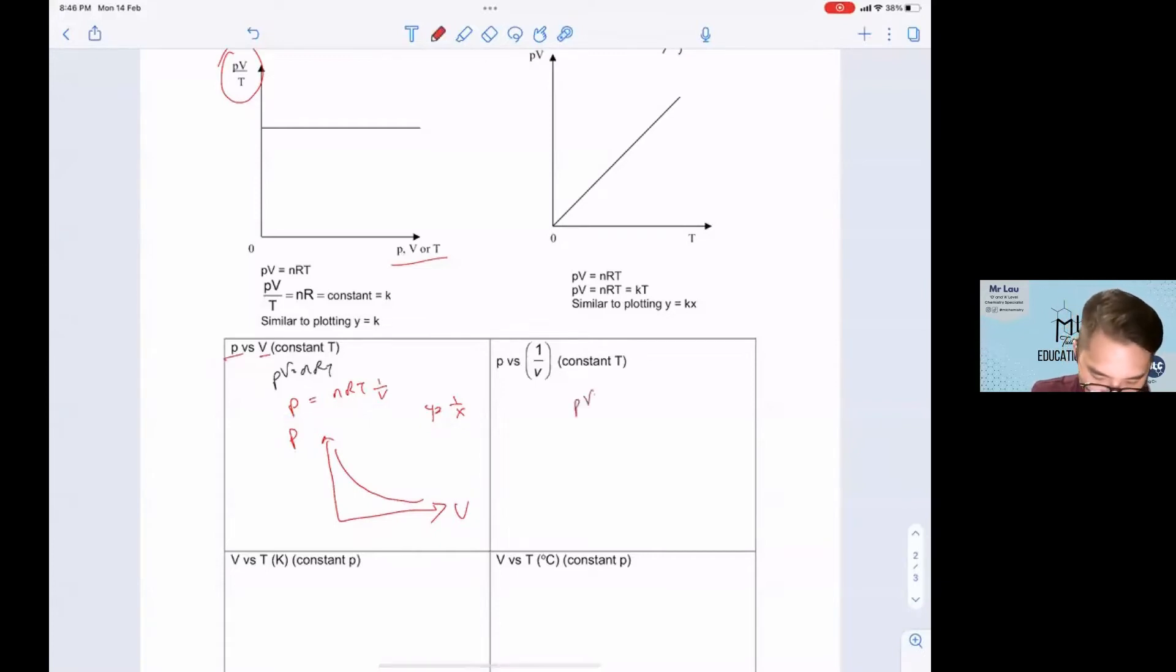Next, let's try again. PV equals nRT. They want P against 1 over V. So P equals nRT times 1 over V. This will be your y. This will be your x-axis. So P against 1 over V will be a straight line cutting through the origin.